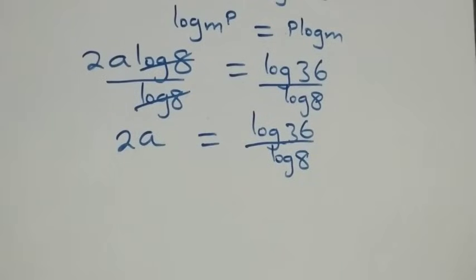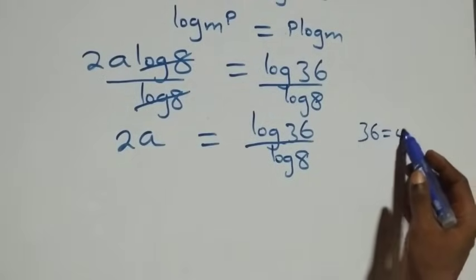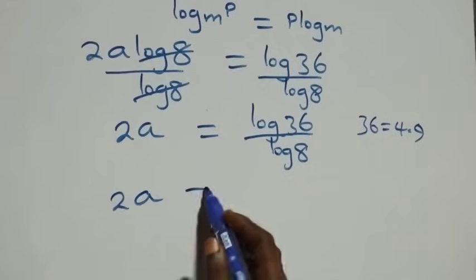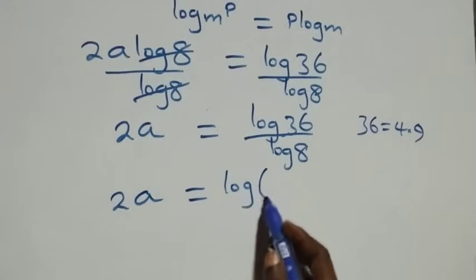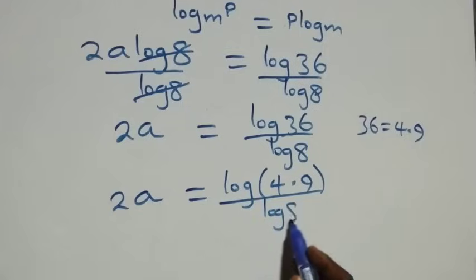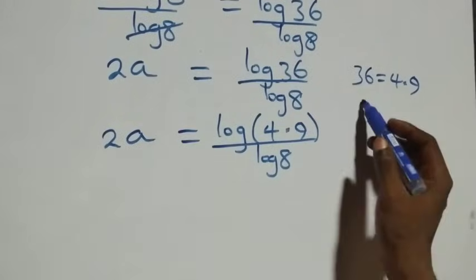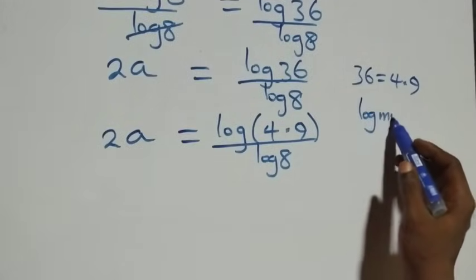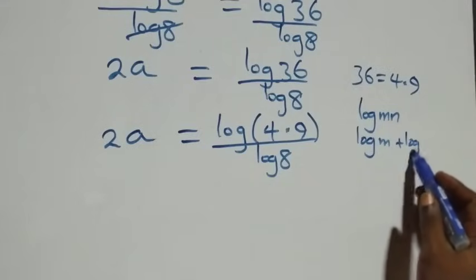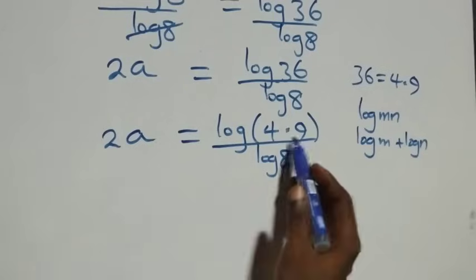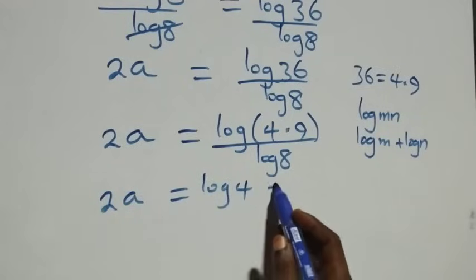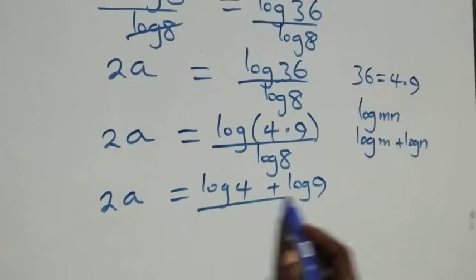Then we can write 36 as 4 times 9, so we have 2a equals log of 4 times 9 over log 8. From the product law of logarithms, log of m times n is the same as log m plus log n. So what we have becomes 2a equals log 4 plus log 9, all over log 8.